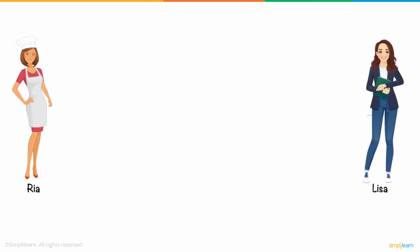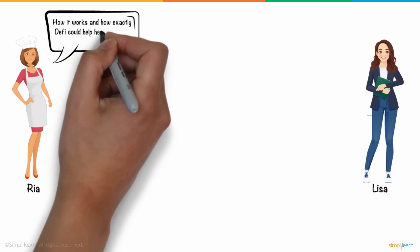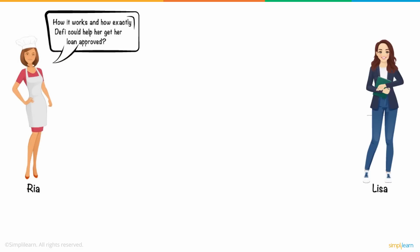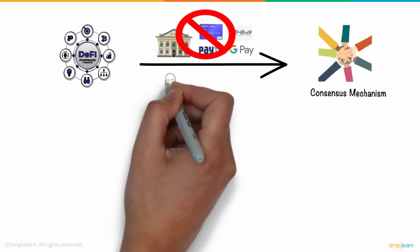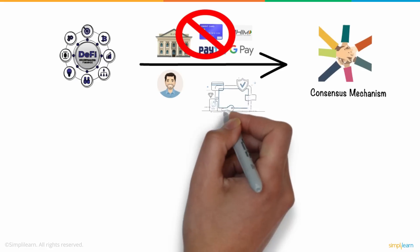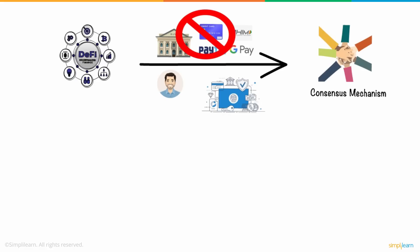Ria was fascinated and asked how it works and how exactly DeFi could help her get her loan approved. Lisa further added that DeFi uses the consensus mechanism to eliminate centralized finance models by allowing anyone or everyone to utilize financial services, regardless of who they are or where they are.